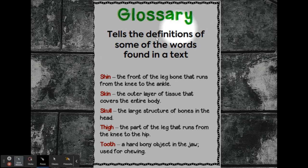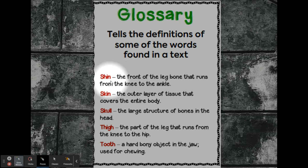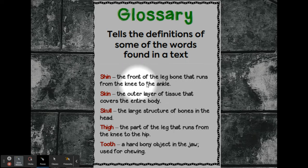The glossary tells the definitions of some of the words found in the text. It's kind of like a dictionary that supports the important words of the text. The words usually look different in the text, and it tells us the definition. A definition is just some words that explain what it means. For example, 'shin' — the front of the leg bone that runs from the knee to the ankle.